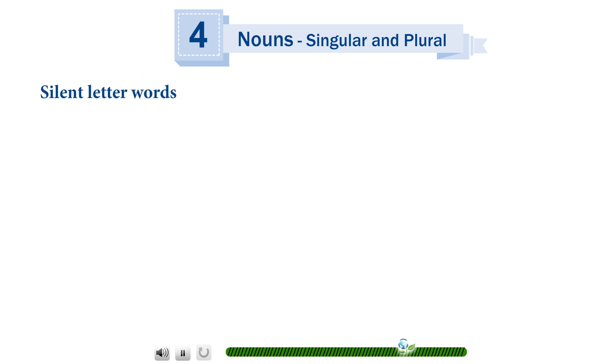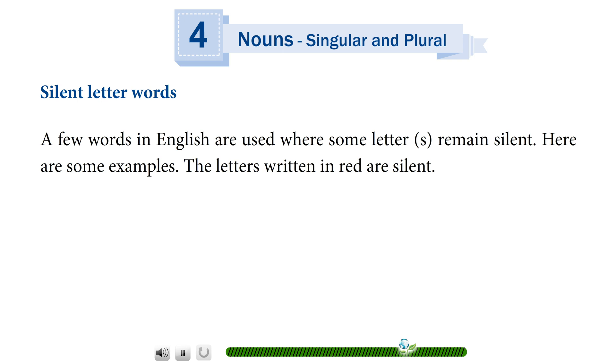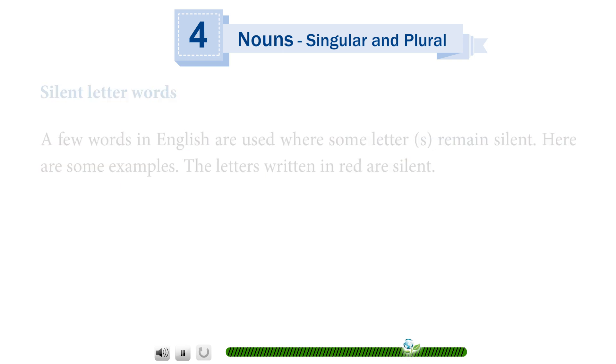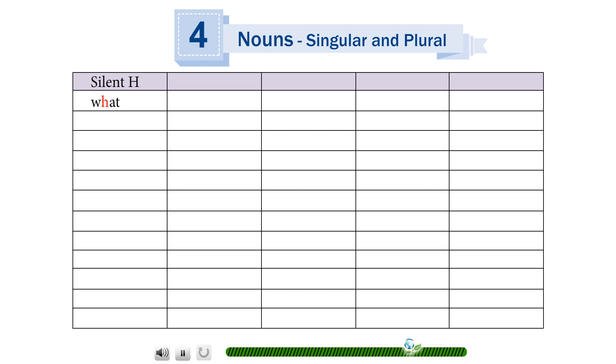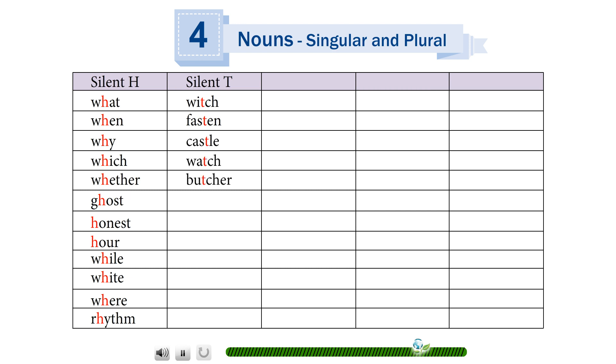Silent Letter Words: A few words in English are used where some letter or letters remain silent. Here are some examples. The letters written in red are silent. Silent H: what, when, why, which, weather, ghost, honest, while, white, wear, rhythm. Silent T: which, fasten, castle, watch, butcher, scratch, listen, match, Christmas, mortgage, soft, often